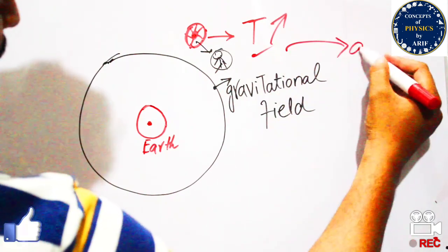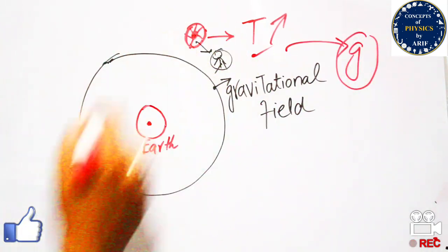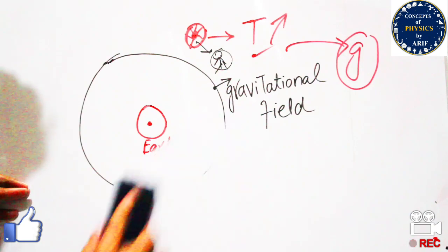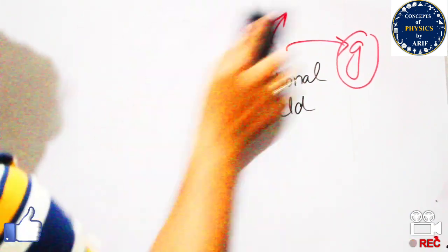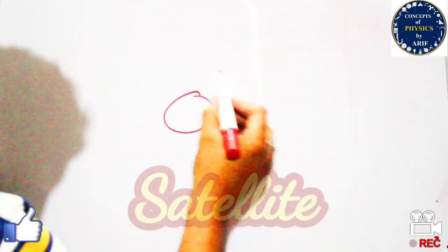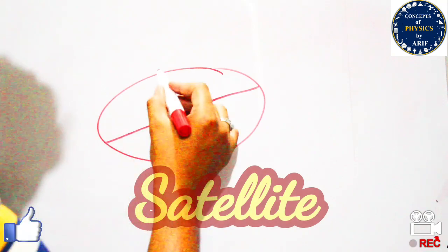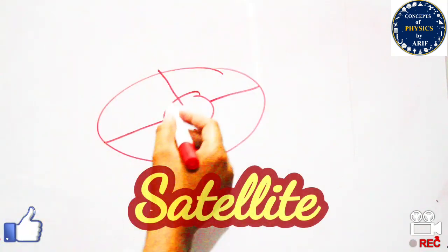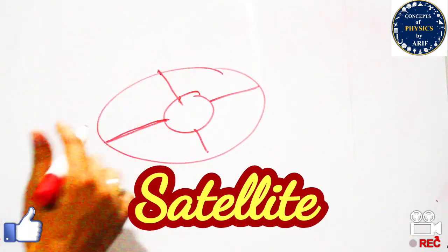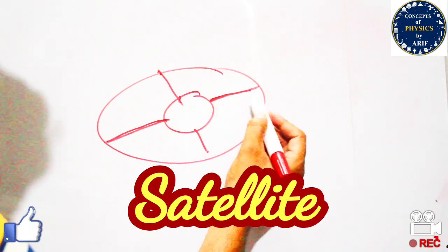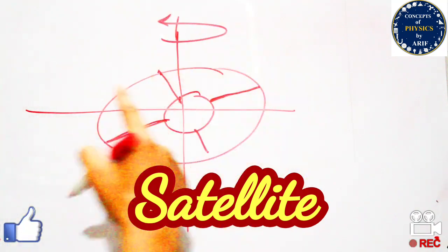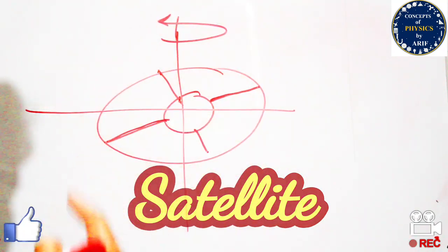We need to generate the value of g in order to make astronauts work and improve their progress. To understand how artificial gravity can be generated: this is an artificial satellite moving around outside the earth's gravitational field. We need to rotate this satellite around its axis. It will rotate around its axis in order to generate the artificial gravity.